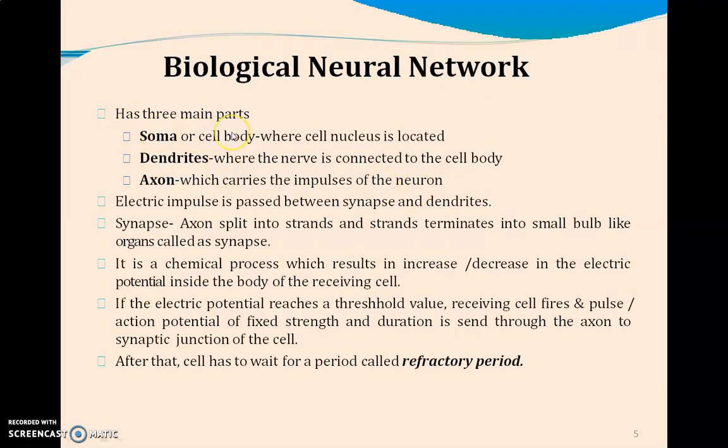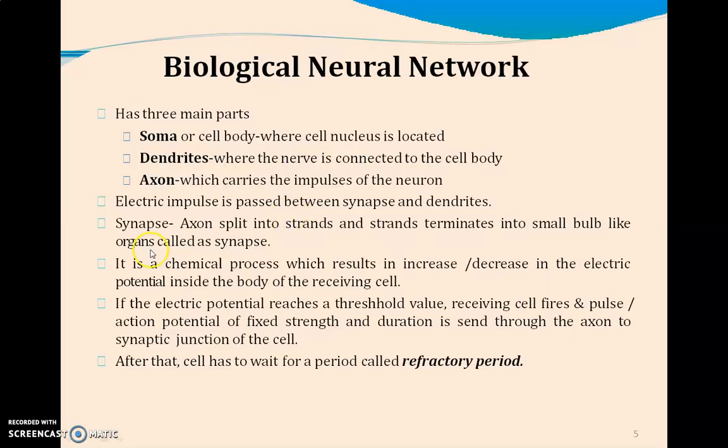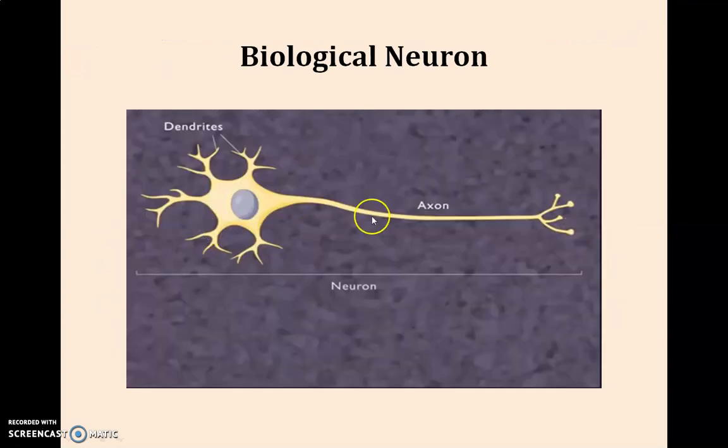There are three main parts of the biological neural structure. One is soma, another is dendrites, and another is axon. Soma is otherwise called the cell body where the nucleus is located. Dendrites connect the nervous system to the cell body. Axon carries the impulses of the neuron and passes through the synapses. Electric impulses always pass between the synapses and dendrites. Synapses are small bulb-like structures present at the end of the axon.